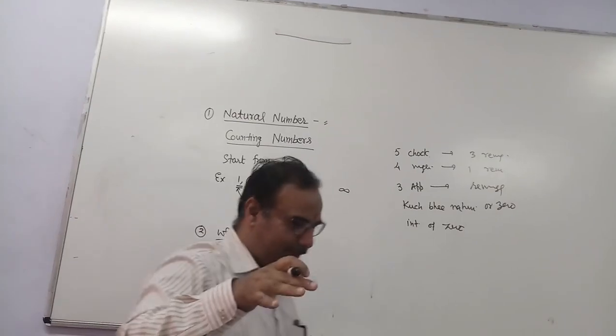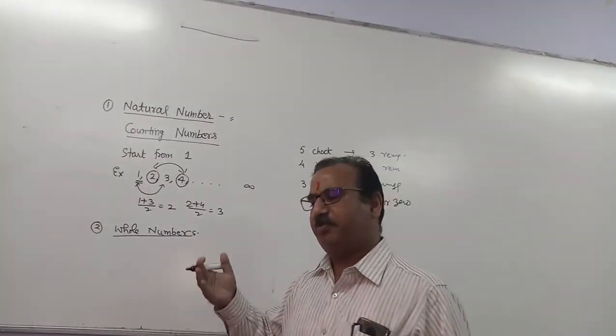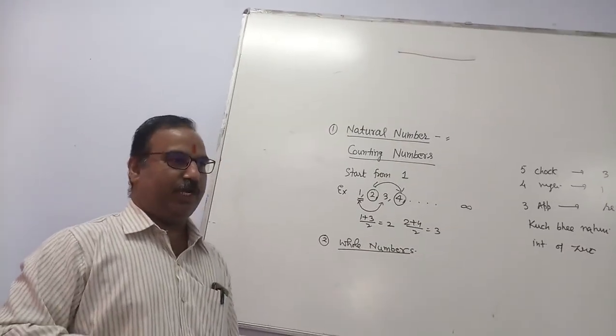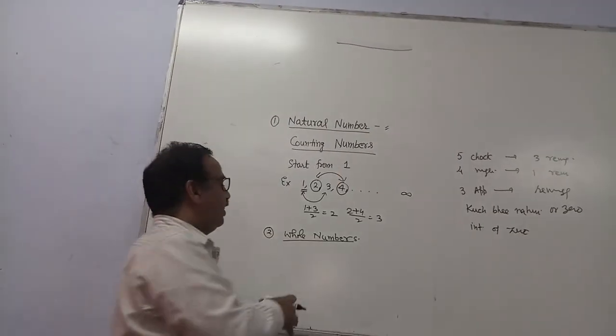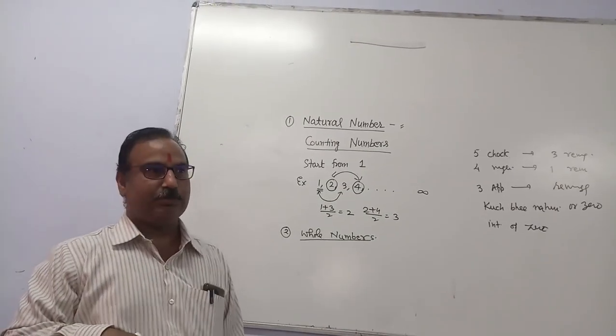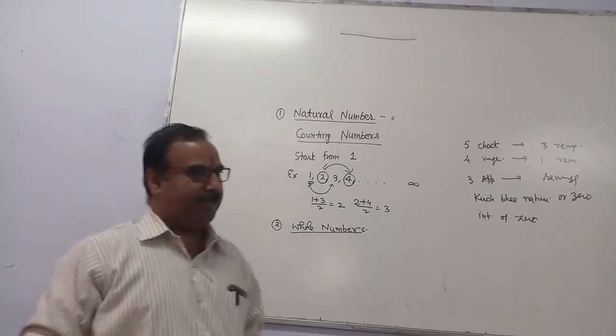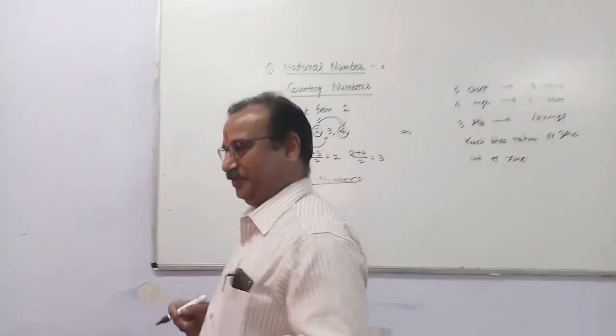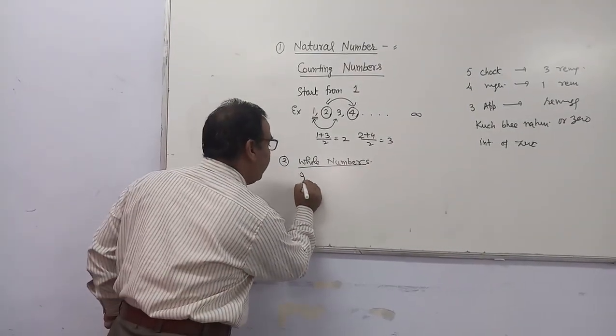So when we include 0 with natural numbers, we get whole numbers. There is one interesting thing. Ten years ago, I was teaching in a class and explaining the same thing. I said if you add 0 to natural numbers, it will become whole numbers. One student said, 'Sir, but when we add 0 to every number, we get the same number.' Yes, he was right. So then I used the term that when you include 0 to natural numbers...